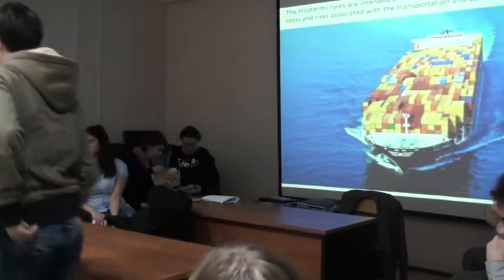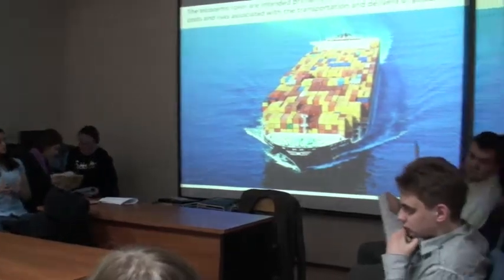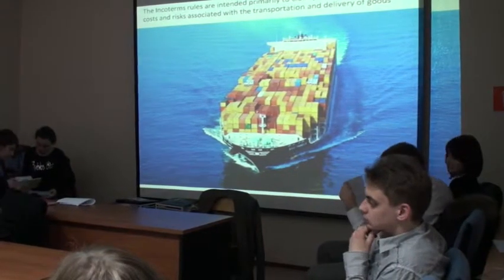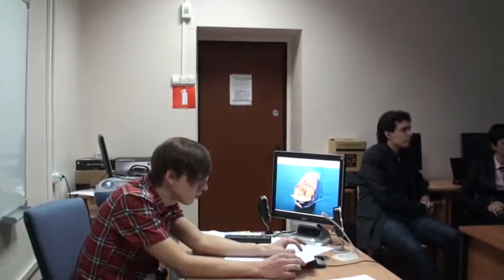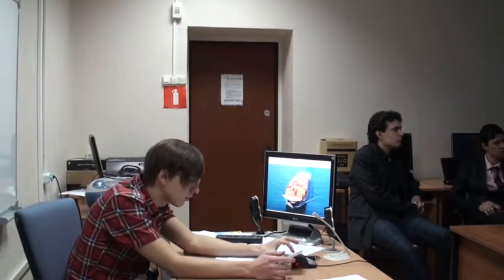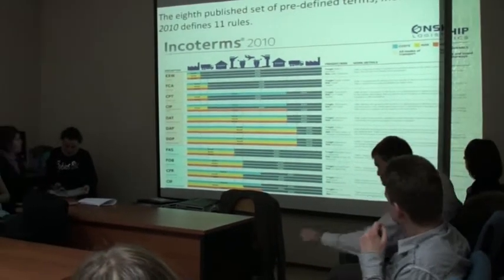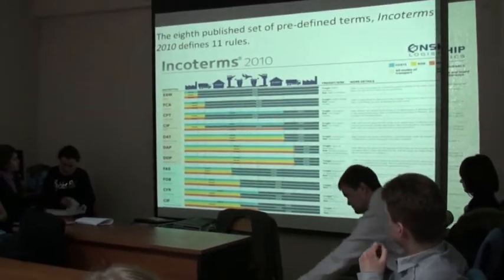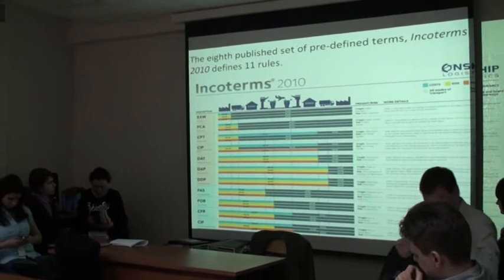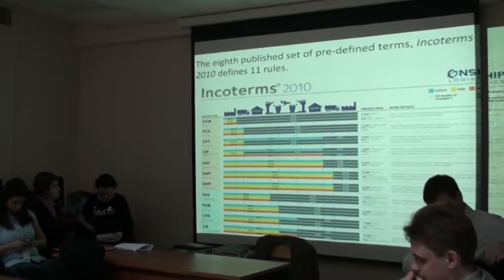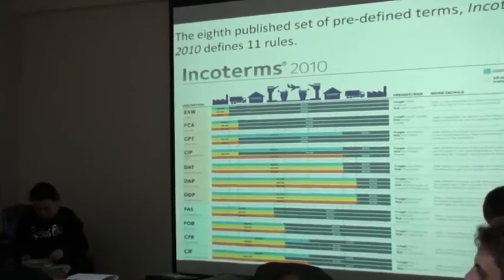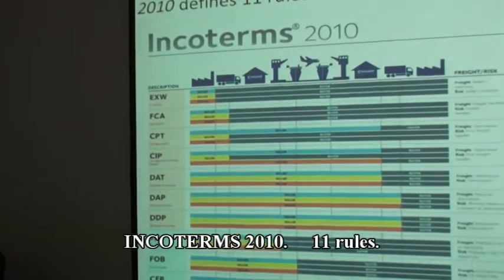The prior version rules were divided into four categories, but the 11 defined terms of Incoterms 2010 are subdivided into two categories based only on method of delivery. The larger group of seven rules applies regardless of the method of transport, with the smaller group of four being applicable only to sales that solely involve transportation over water.